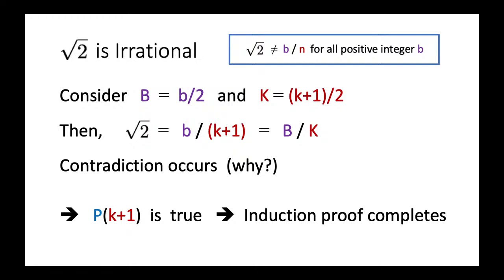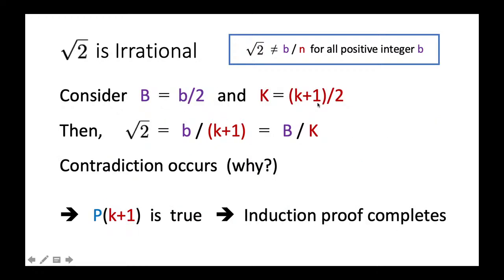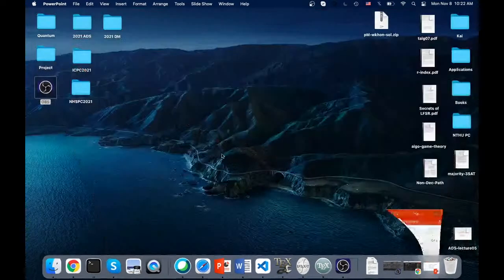Since assuming P(k+1) is false leads to a contradiction, P(k+1) must be true. The inductive step is proven and the entire induction proof is complete. That's all I wanted to share today — let me see if you have any questions.